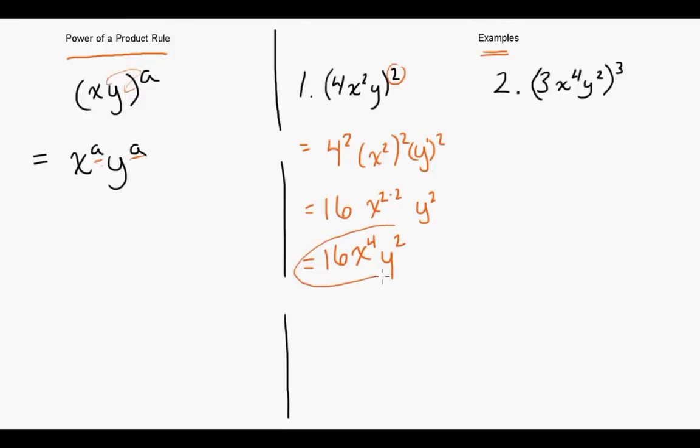Looking at our second example, we have 3x to the exponent 4, y squared, all cubed. So distribute that 3 into the bracket, to the 3, to the x, and to the y.